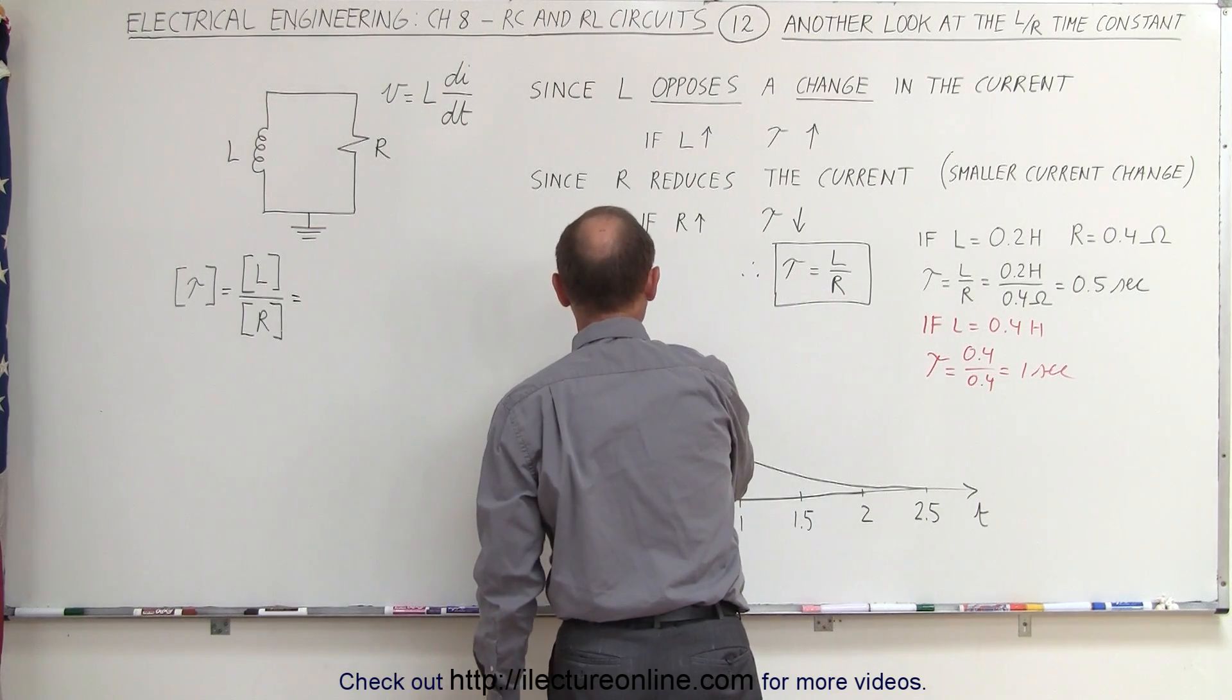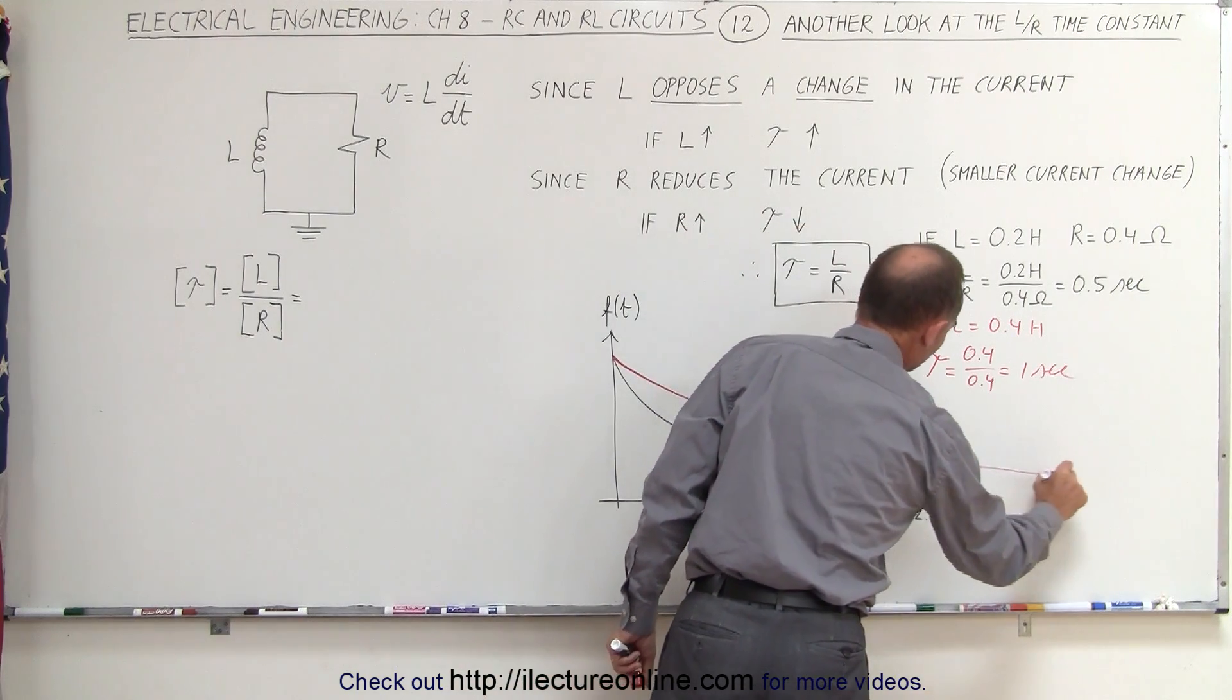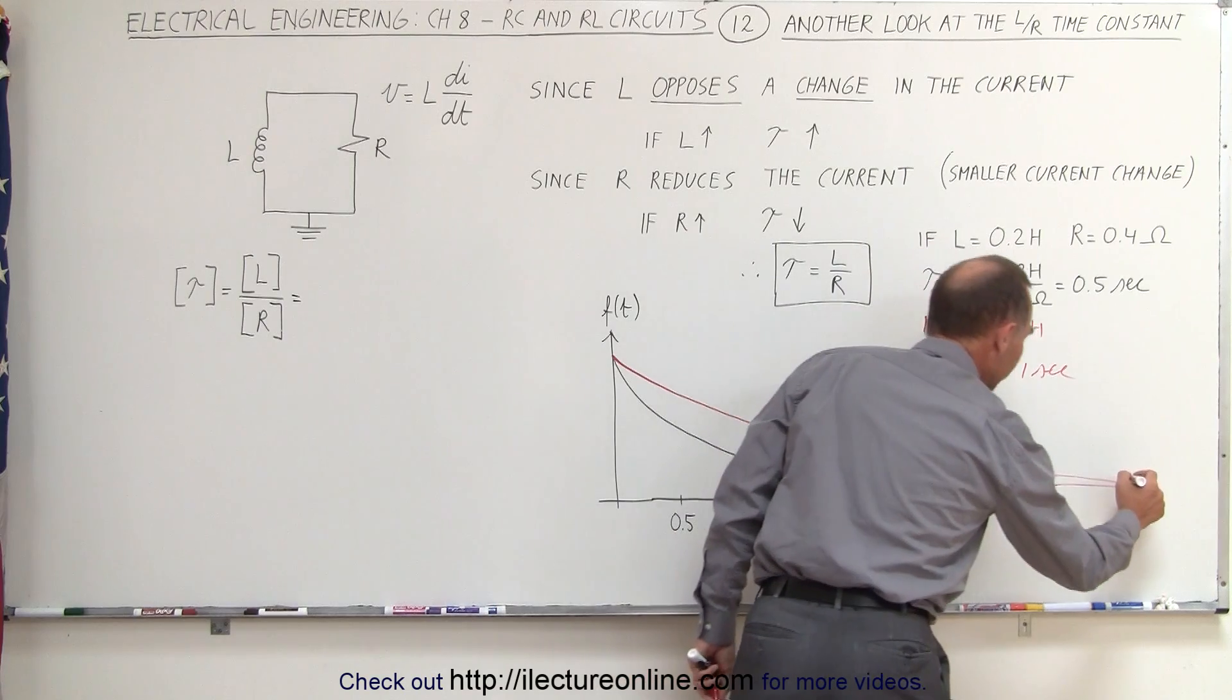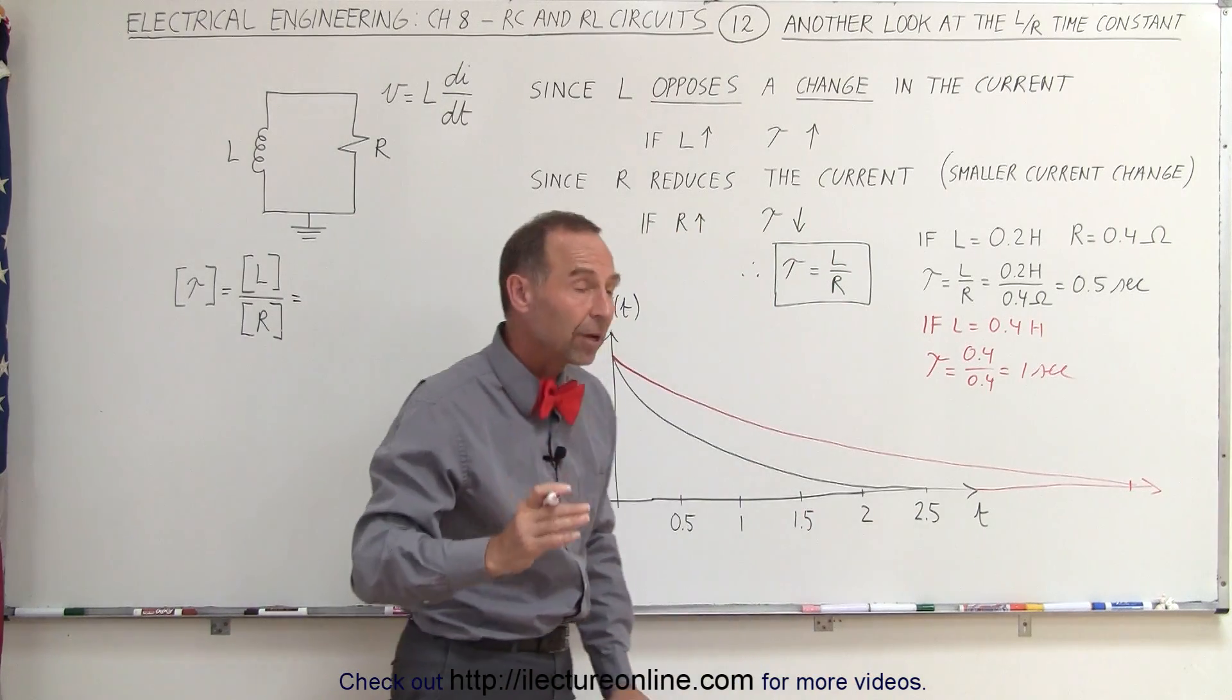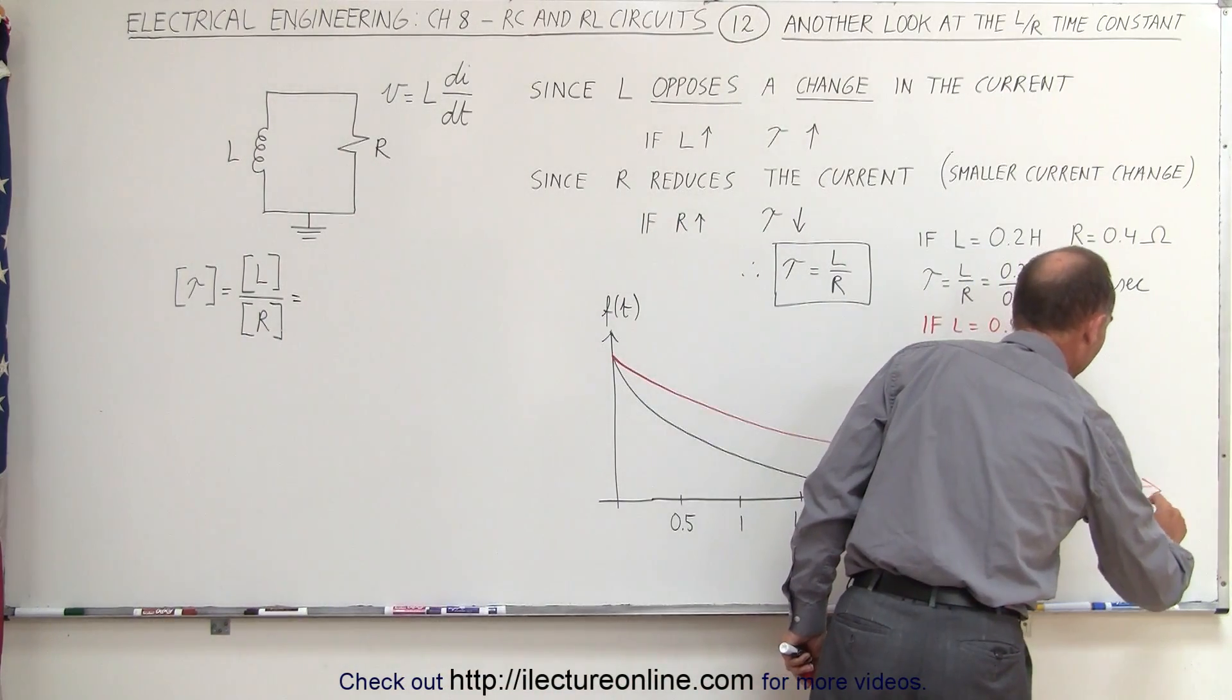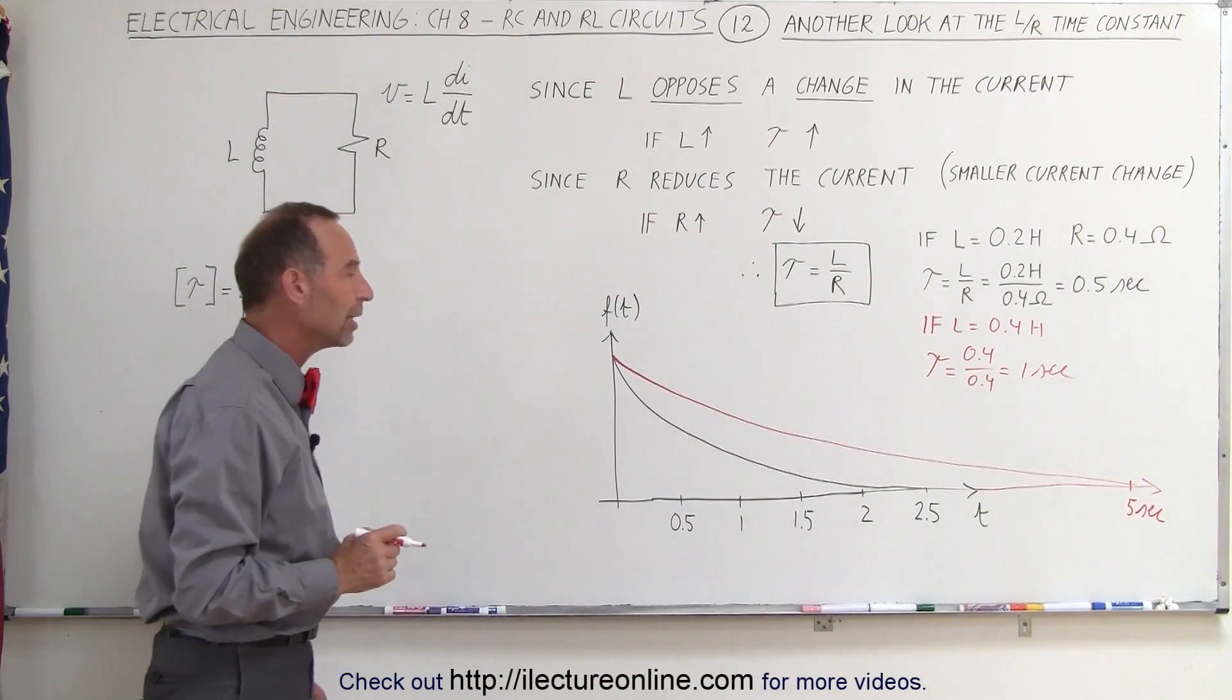And so the decay constant, or the decay curve will be a lot slower. It'll just simply take a lot longer for the final value of the current or the voltage to be reached. In this case, the number of time constants are still the same, but since each time constant is greater, it'll take a much greater amount of time. So let's say it will take about five seconds for the very close to the final value to be reached.